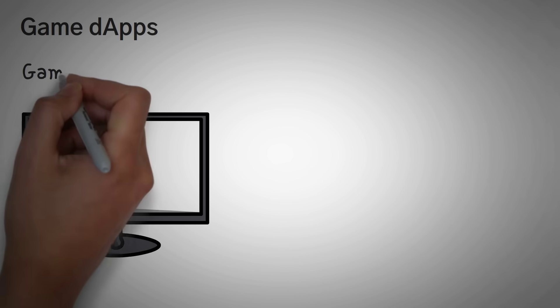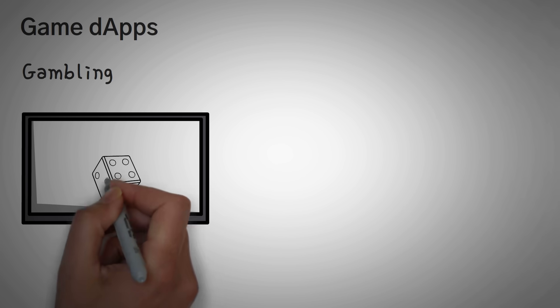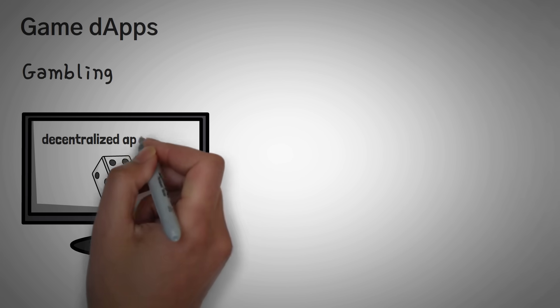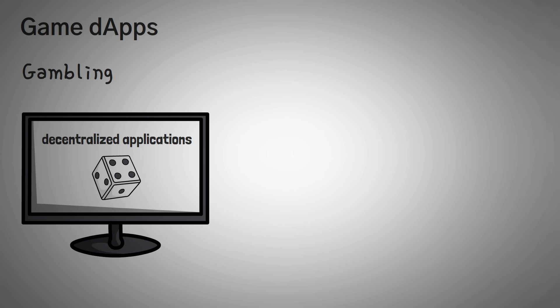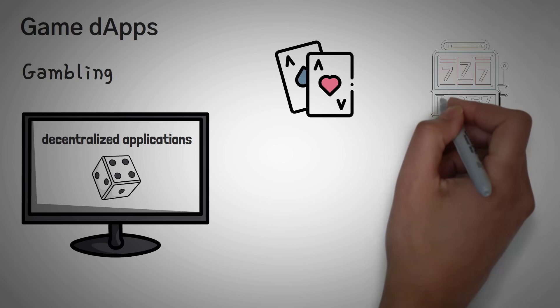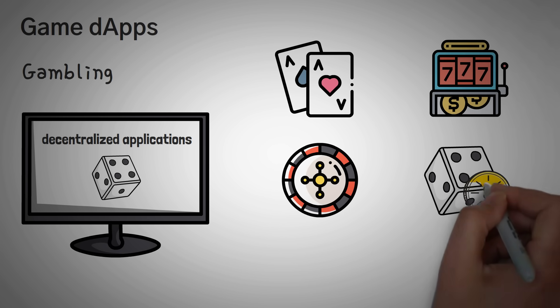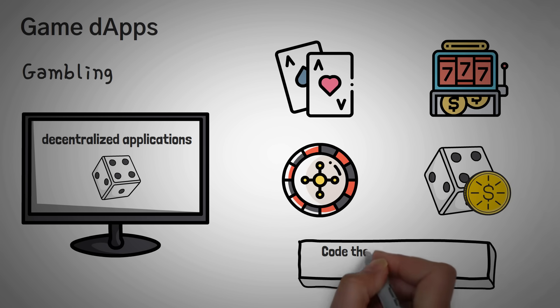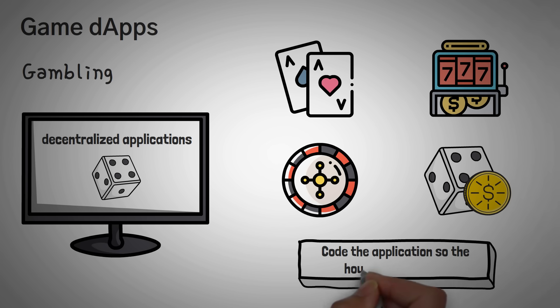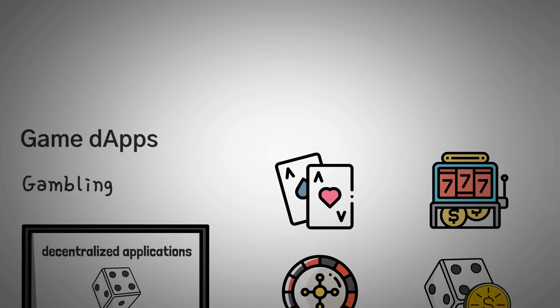Number three is basically gambling. Just like Zed is technically a gambling app, there is a massive list of blockchain gambling websites that are technically decentralized applications. There are dApps that allow you to play poker, slots, roulette, and even simpler games like dice rolling or coin tossing. You can actually code these applications so that the house always wins, even if it's by just 1%, but people love playing these games.